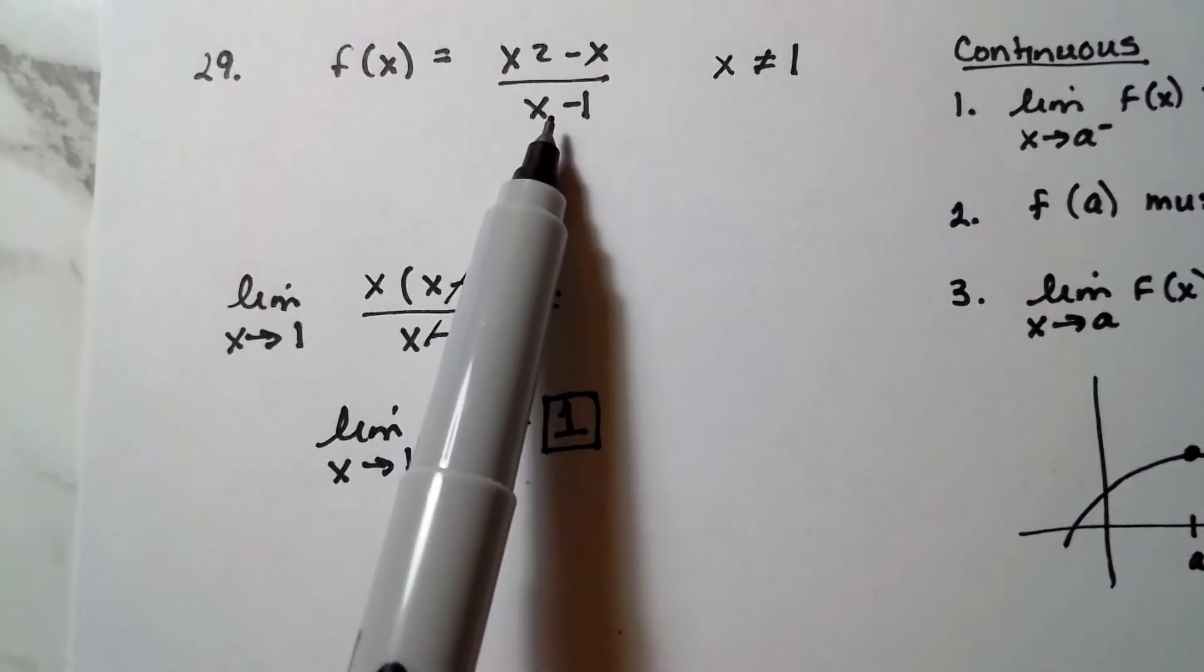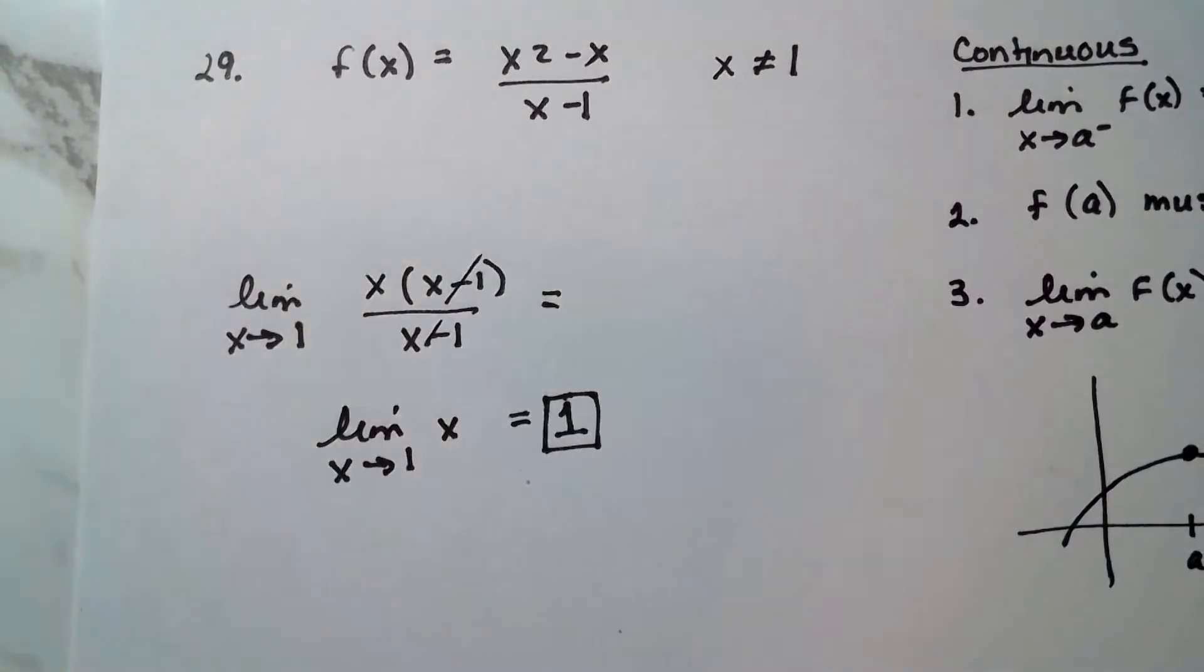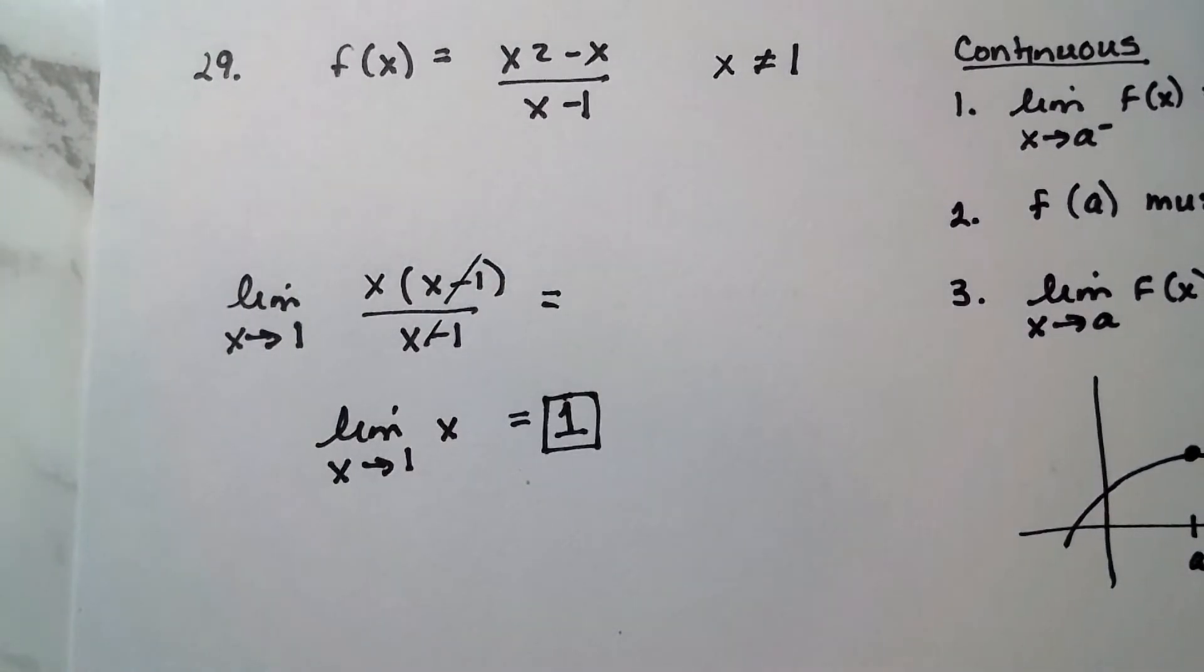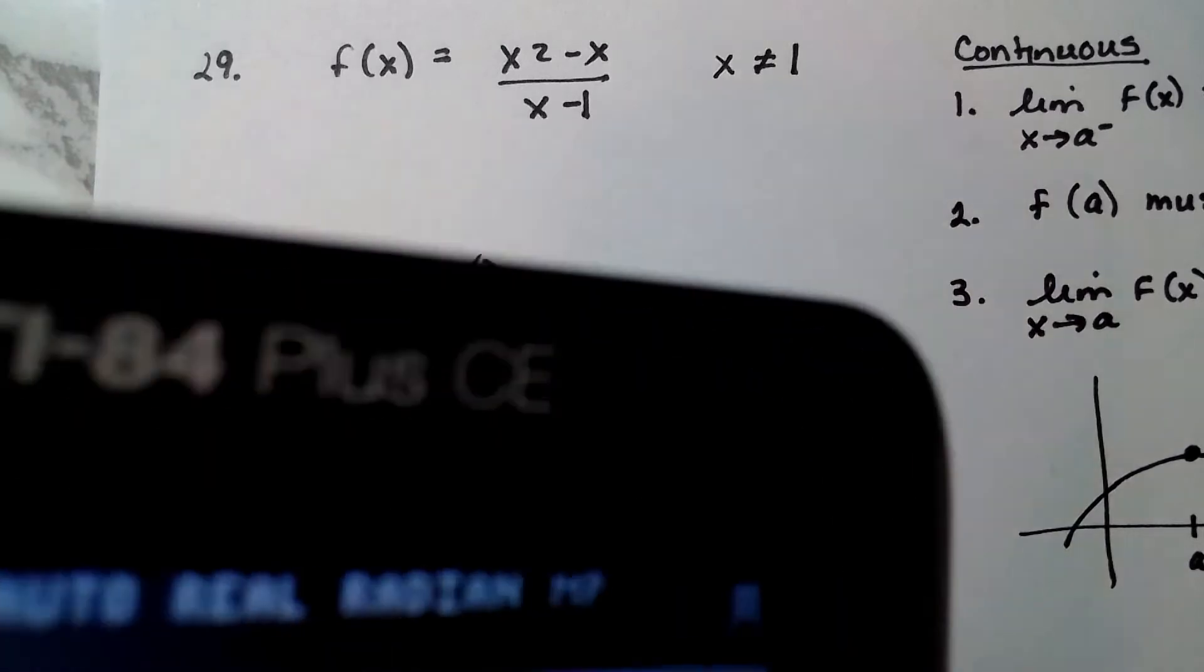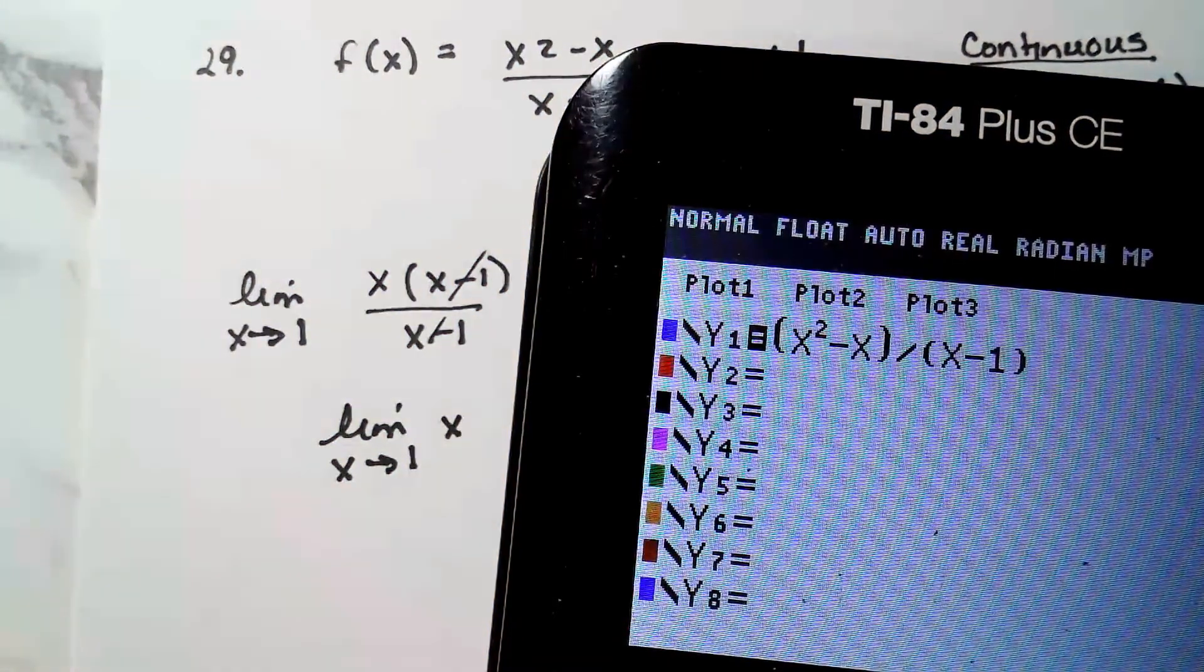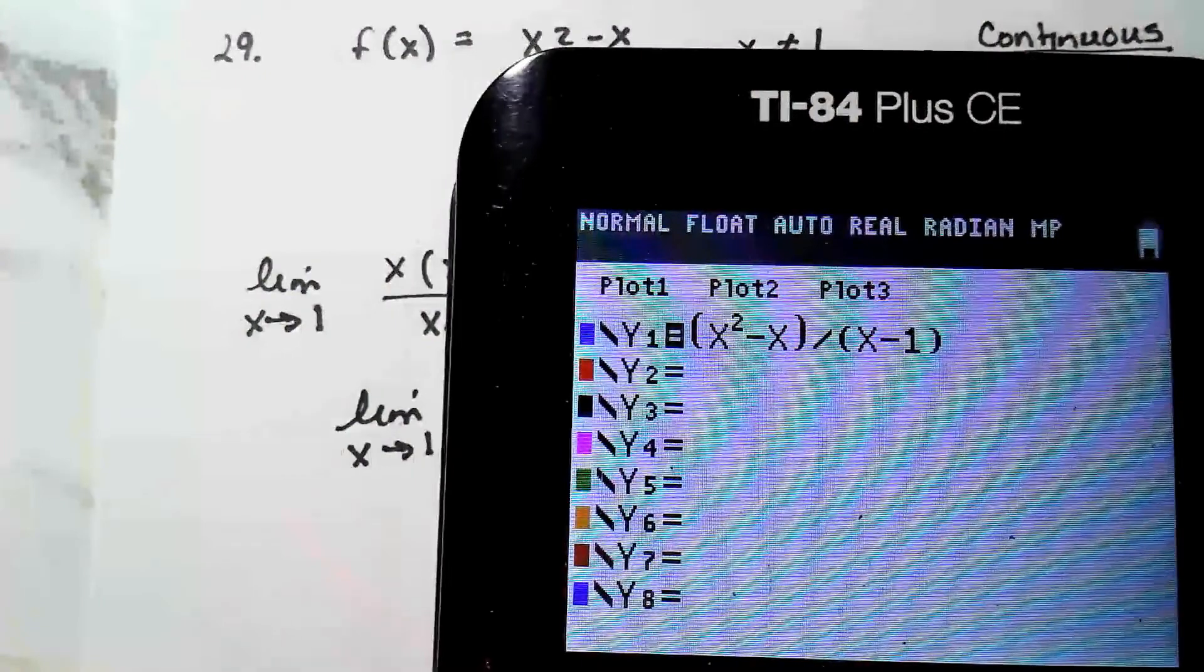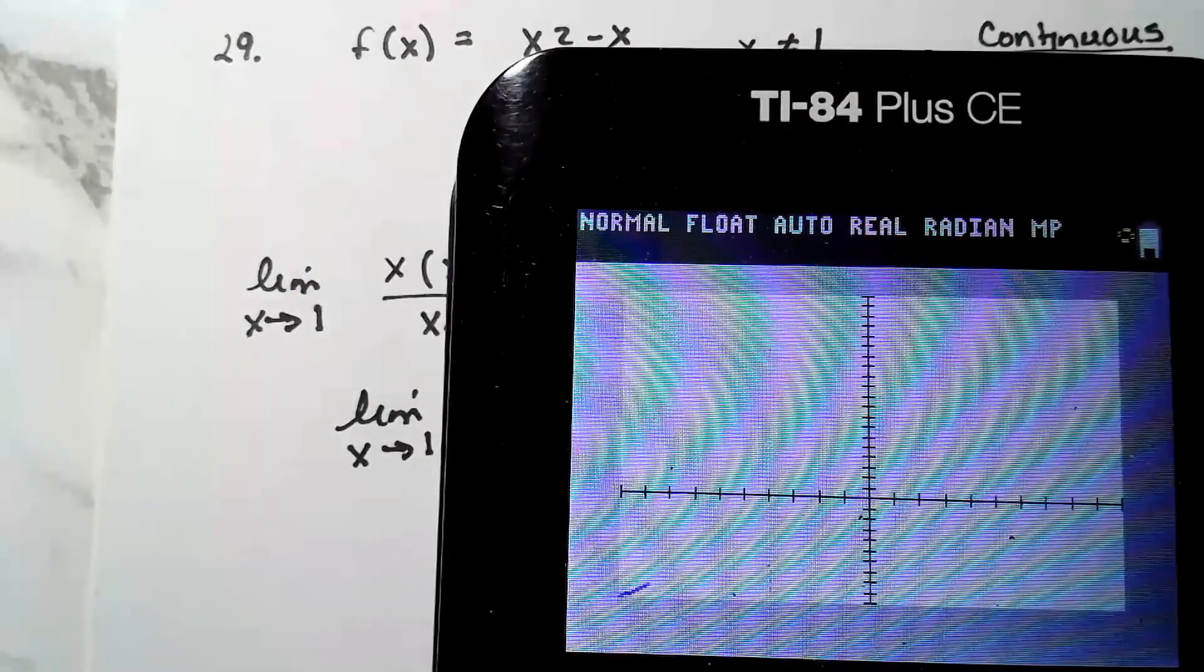So right now, this function has a hole, and I'll go ahead and graph it while I'm talking. This function has a hole in it at x is equal to one, or an asymptote maybe, or something like that. So if I graph it, just to get a look at what this thing looks like, I'm going to have x minus one downstairs. And let me put my parentheses right, because if we don't, then there's a problem. So I'm putting this function in just like this, parentheses on top, x squared minus x over x minus one.